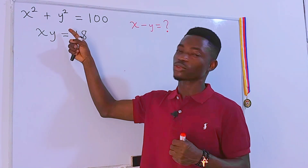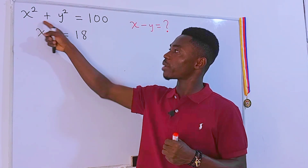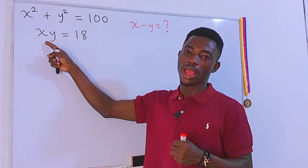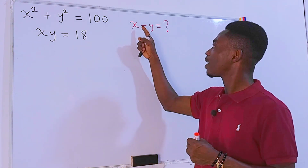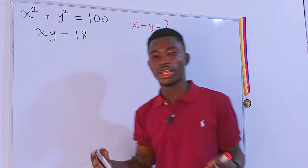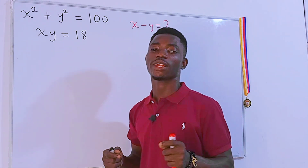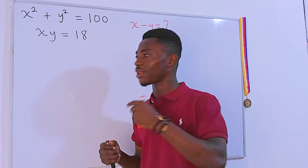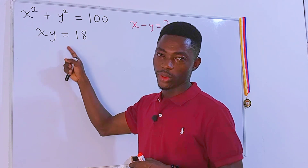Today we have this interesting question: x squared plus y squared is equal to 100, xy is equal to 18, and we have to find the value of x minus y. Pretty interesting question — feel free to pause the video and give it a try first. Done? Now let's begin.